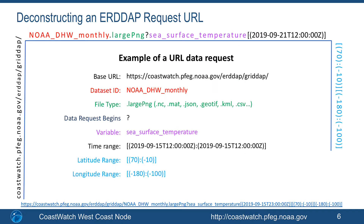Here the text wrapped around the slide is an actual URL. I've marked different parts of it in different colors to highlight what they are. The red text marks the data set ID. The green text marks the file type — in this case a PNG file, so this will produce an image. The purple text is the variable name, in this case sea surface temperature. The black text is the time range, and the blue text is the latitude and longitude ranges. So this URL will produce a map of sea surface temperature for September 2019 for the North Pacific, which we'll see on the next slide.